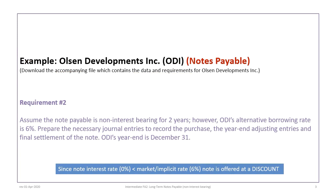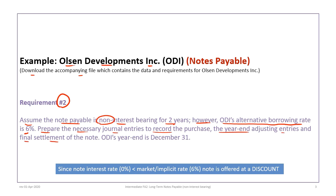This tutorial continues with the example used in Tutorial 1a, following the Olson Developments (ODI) example, now addressing requirement 2 of that problem. We assume the note payable is non-interest bearing for two years, and ODI's alternative borrowing rate is 6%. We will prepare journal entries to record the purchase, year-end adjusting entries, and final settlement of the note. ODI's year-end is December 31st.